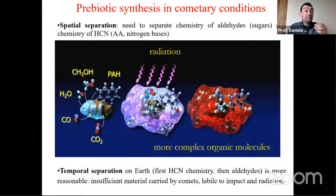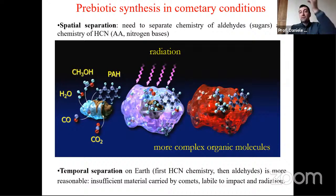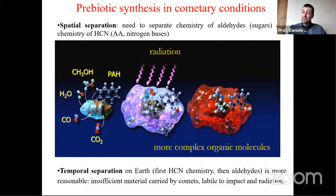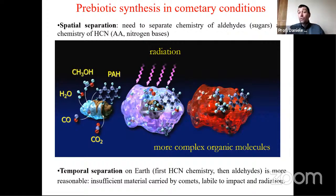One theory proposed that a special spatial separation allowed Earth to produce sugar, while nitrogen bases were brought by comets falling on Earth. Nowadays, we think that a temporal separation on Earth is more reasonable with respect to the spatial separation. We think that on Earth, first the hydrocyanic acid chemistry appeared, and then, when all the hydrocyanic acid was used for the production of nitrogen bases and amino acids, only at that time could the chemistry of sugar take place.